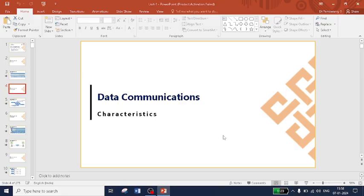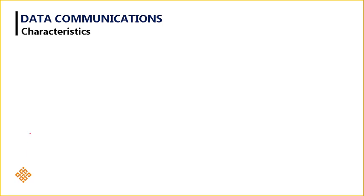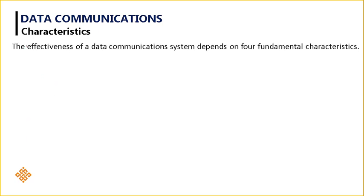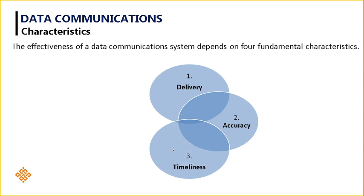Good morning students. In this video I will be discussing the basic characteristics of data communication. The effectiveness of a data communication system mainly depends on four fundamental characteristics. The first one is delivery, the second one is accuracy, the third one is timeliness, and lastly we have jitter.